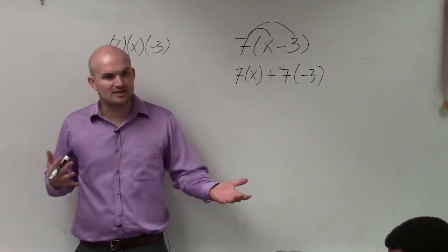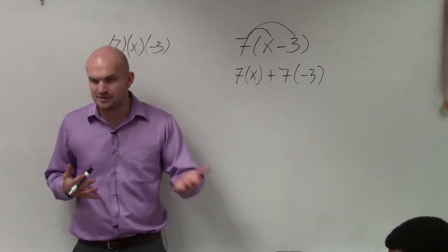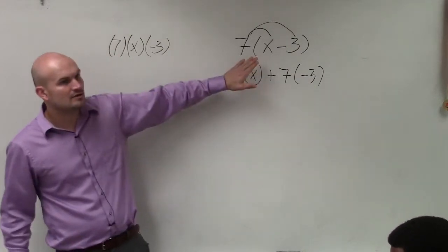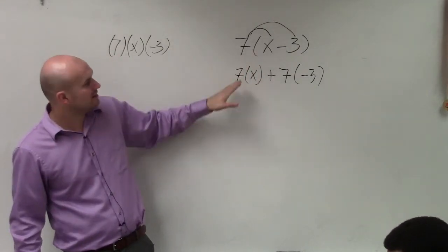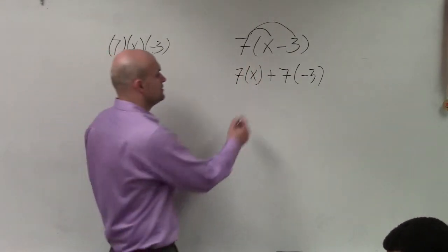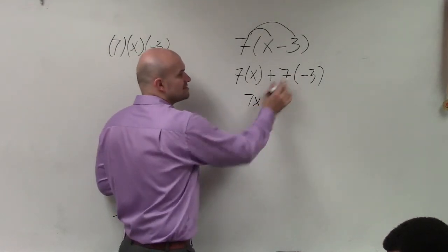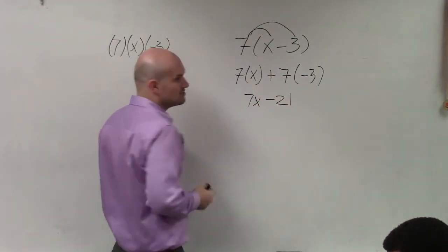Just like when multiplying or dividing fractions, we didn't have to have common denominators. So when you have non-like terms, you can just multiply. 7 times x equals 7x, and 7 times negative 3 is negative 21.